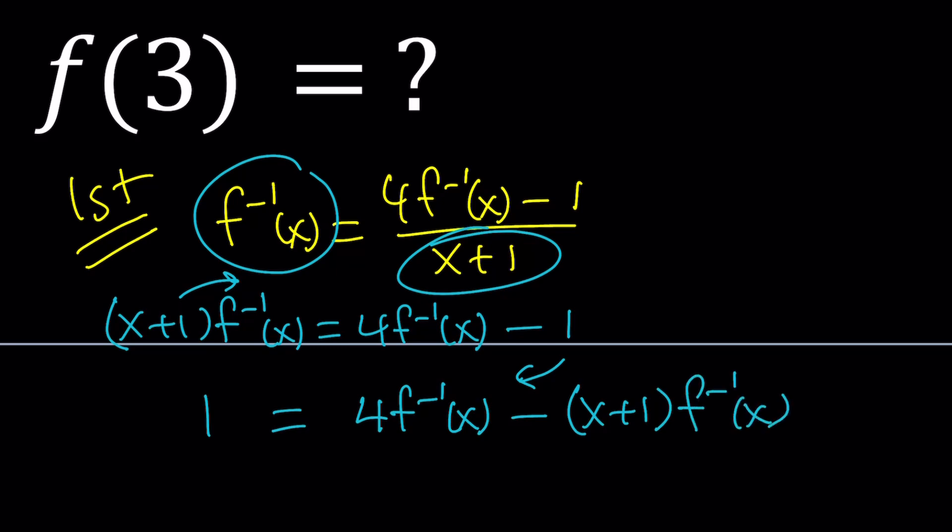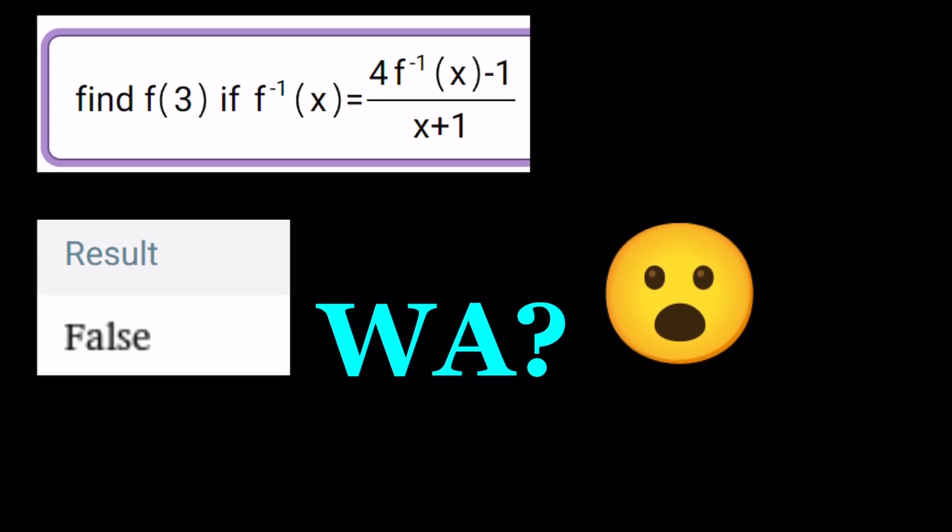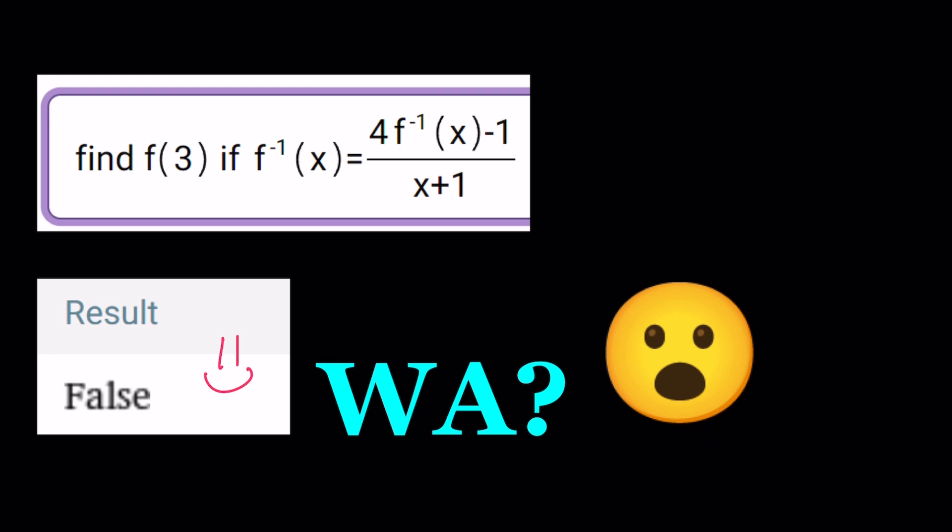But before we proceed with the solution, take a look at what WolframAlpha gave me when I tried to use it to solve this problem. I don't know if my prompt is good enough, is there another way to do it, but result is false. Are you serious? There's a result which we're going to find out in a little bit. In a sense, I'm going to say at this point, human beings are still better than AI. Even though there's a big hype about it, they're still not there yet.